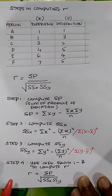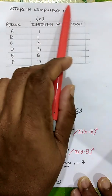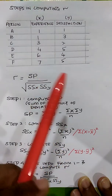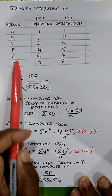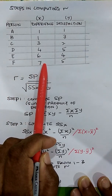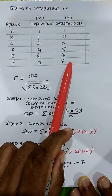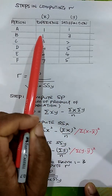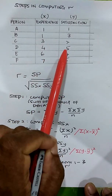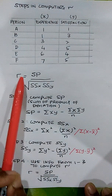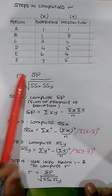Hello everyone. In this video I'm going to show you how to compute the Pearson correlation coefficient, referred to as r. Let's say that we have a dataset of six participants, looking at their responses on work experience and their job satisfaction. We have two continuous variables from the same individuals, and we are going to compute r and test for its significance.